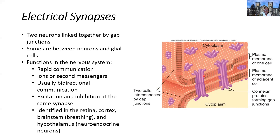Electrical synapses are usually bidirectional and use ions or second messengers, keeping the form of energy as electrical. The movement of sodium through the gap junctions can depolarize the adjacent neuron, or second messengers like calcium can move through the gap junction and depolarize as well. Because we don't have to convert the signal into chemicals, it can be much faster, and because of the gap junction it can be bidirectional — going back and forth from one neuron to the other.